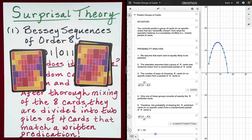You correctly predict a group of cards, in no specific order, that are randomly chosen from what the spectator believes is a completely shuffled, that is, mixed packet of cards. Probability analysis. We will assume that each card is equally likely to be selected for any one group. The spectator assumes that a group of R cards, so in our particular case it will be four cards, are randomly chosen from a randomized packet of eight cards. So N for us right now is eight.